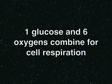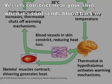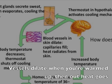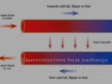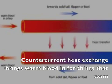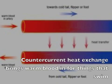One glucose and six oxygens combined. Blood vessels constrict near your skin when it's cool, sending blood back in. Vessels dilate when you're warmed up, then heat goes out. Sweat for a minute — countercurrent heat exchange brings warm blood in.